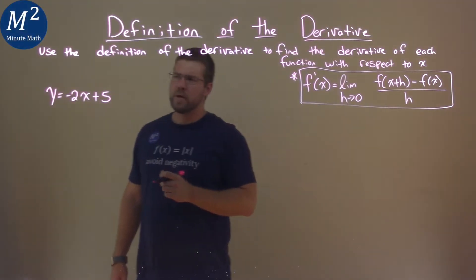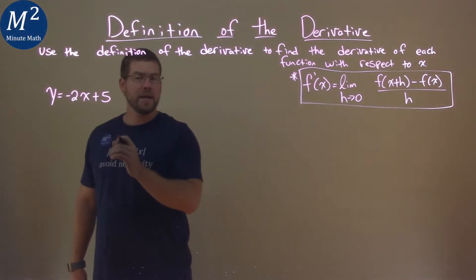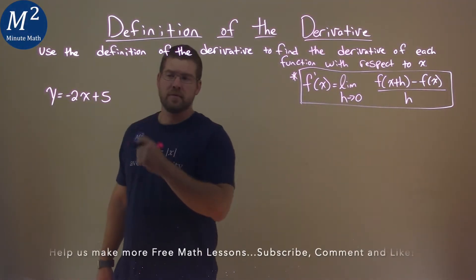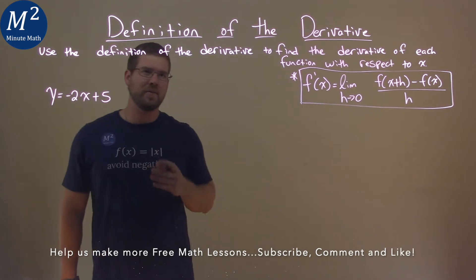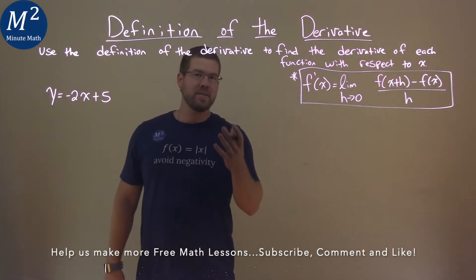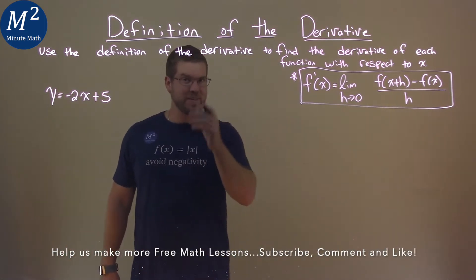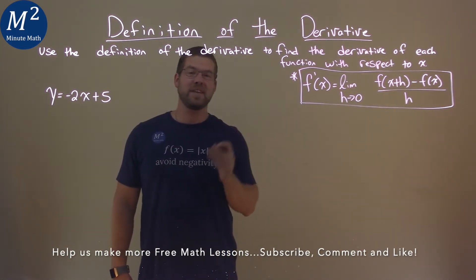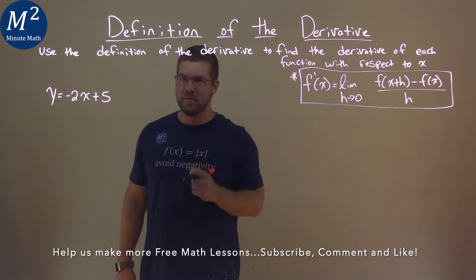We're given this problem right here: y equals negative 2x plus 5, and we need to find the derivative of this function using the definition of the derivative.